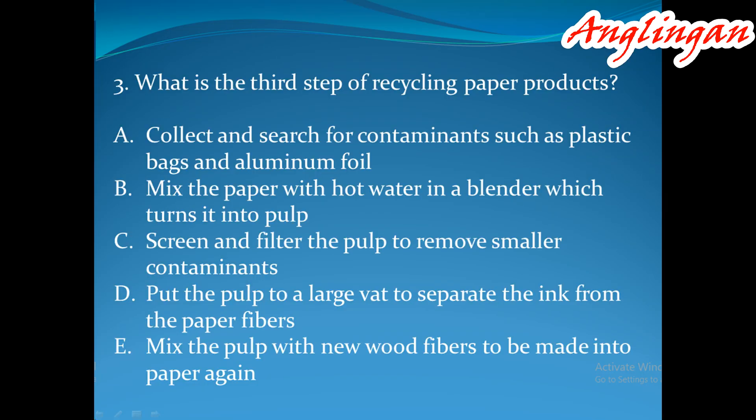Question number 3: What is the third step of recycling paper products? A. Collect and search for contaminants such as plastic bags and aluminum foil, B. Mix the paper with hot water in a blender which turns it into pulp, C. Screen and filter the pulp to remove smaller contaminants, D. Put the pulp into a large vat to separate the ink from the paper fibers, E. Mix the pulp with new wood fibers to be made into paper again.